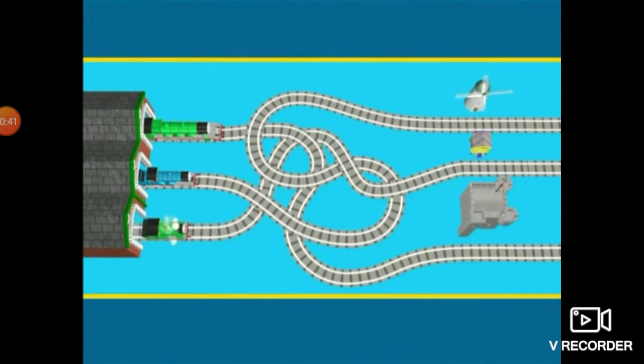Percy puffs along his track, around lots of corners. It's very twisty. Where do you think it's going to take him? It looks like Percy is going to the Beach Cabin at Bluffs Cove.